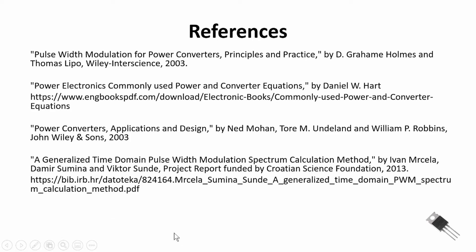Modulating the amplitude — changing the amplitude index — will allow us to adjust the amplitude of our current waveform. Here are a number of excellent references pertaining to PWM power converters, and I will provide this information in the description below.